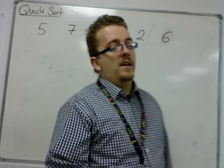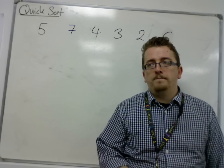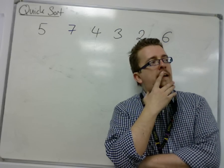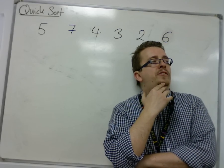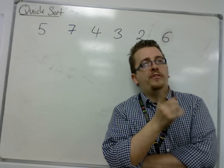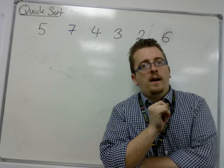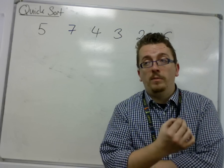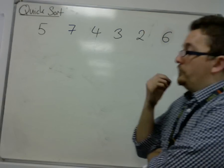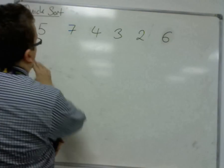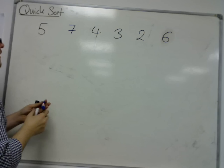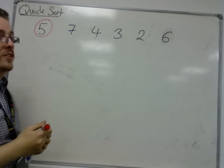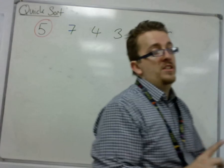If you are consistent in your method, then that is perfectly fine as choosing your pivot. However, instead of possibly making a mistake with that, I've now adopted using always the first number of any sublist. So in this original list, I would use five as my first pivot.